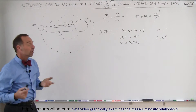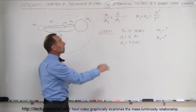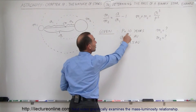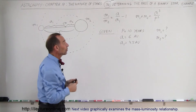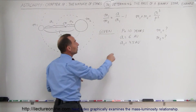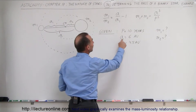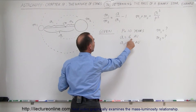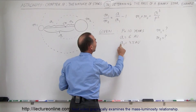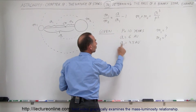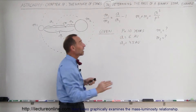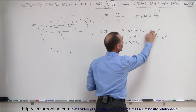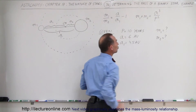In our example, the period is 10 years — that's how long the small star takes to revolve around the large star. The distance between the two is 6 astronomical units, and the distance to the center of mass for the small star is 4.5 astronomical units. We're supposed to find the mass of the two stars.